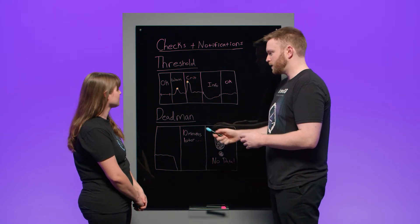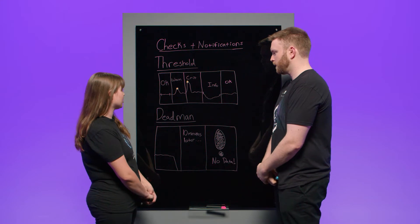Very cool. Okay, so let me boil this down real quick. A threshold check monitors the underlying data and evaluates it and sets these levels, essentially. And a dead man check checks for the existence of data. Is that right? That is completely correct.